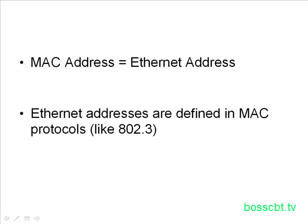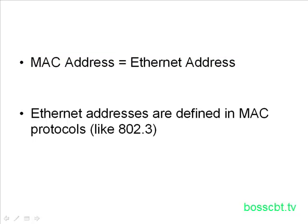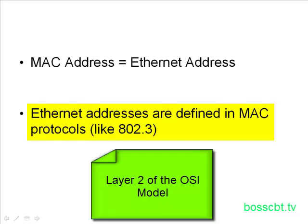When we talk about MAC addresses, we are really talking about Ethernet addresses. If you have an Ethernet network, each device on that network needs an Ethernet address, a MAC address, in order to communicate with everyone else. Think of the MAC address as being similar to a postal address for your home — this is how people find you. Ethernet addresses are called MAC addresses because they're defined in the MAC protocols like 802.3, so we're talking Layer 2 of the OSI model.